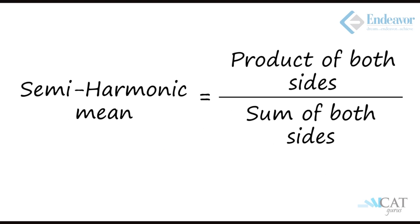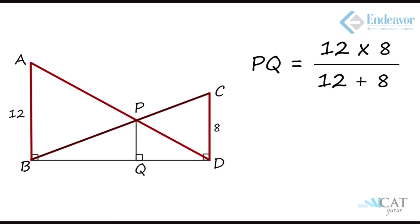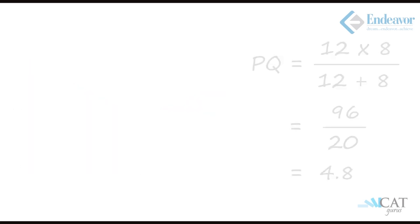The semi-harmonic mean is the product of both sides divided by their sum. So AB into CD, that is 12 into 8, divided by 12 plus 8, gives 96 divided by 20, which is 48 divided by 10, or 4.8. Hence side PQ is 4.8 centimeters.